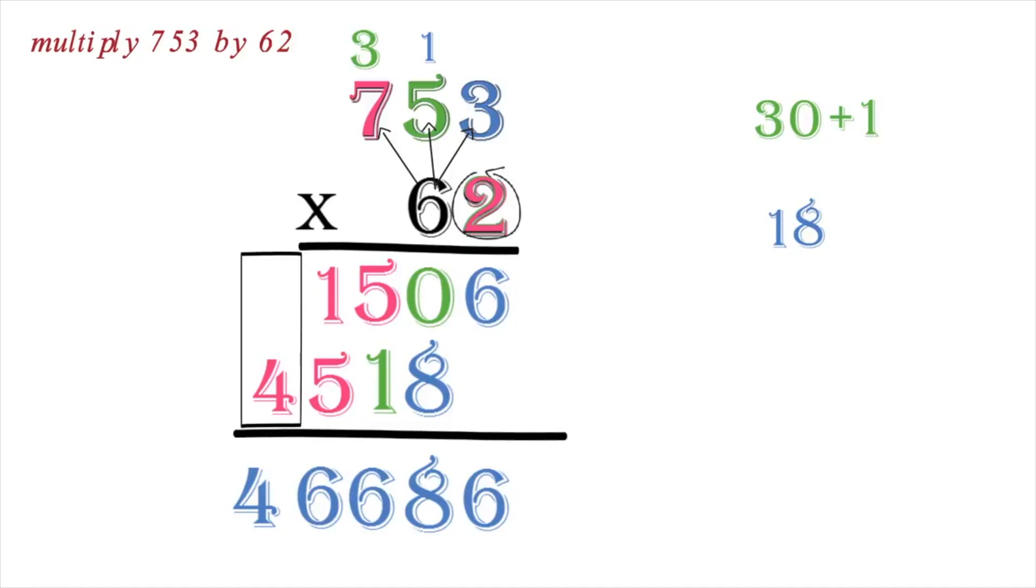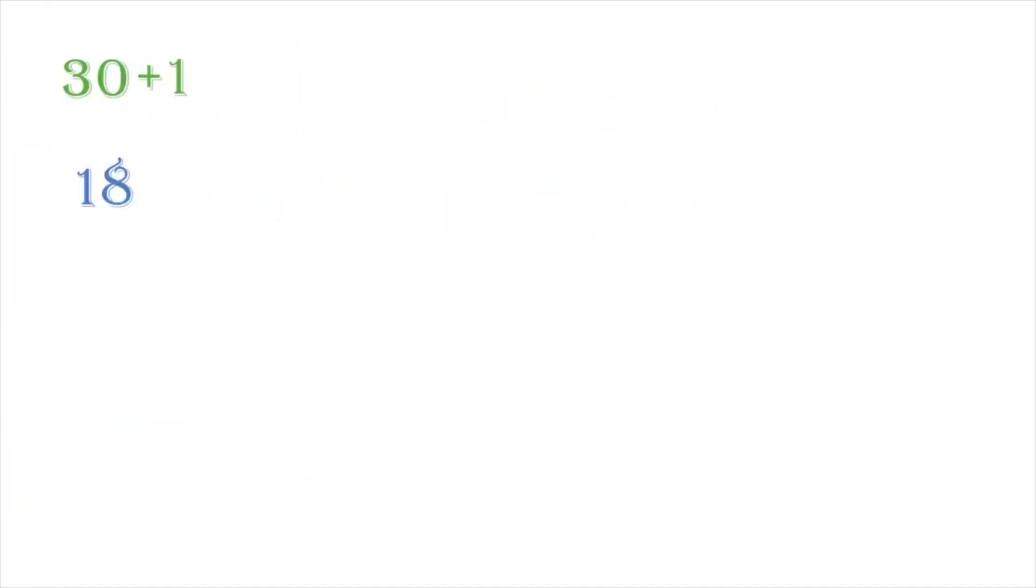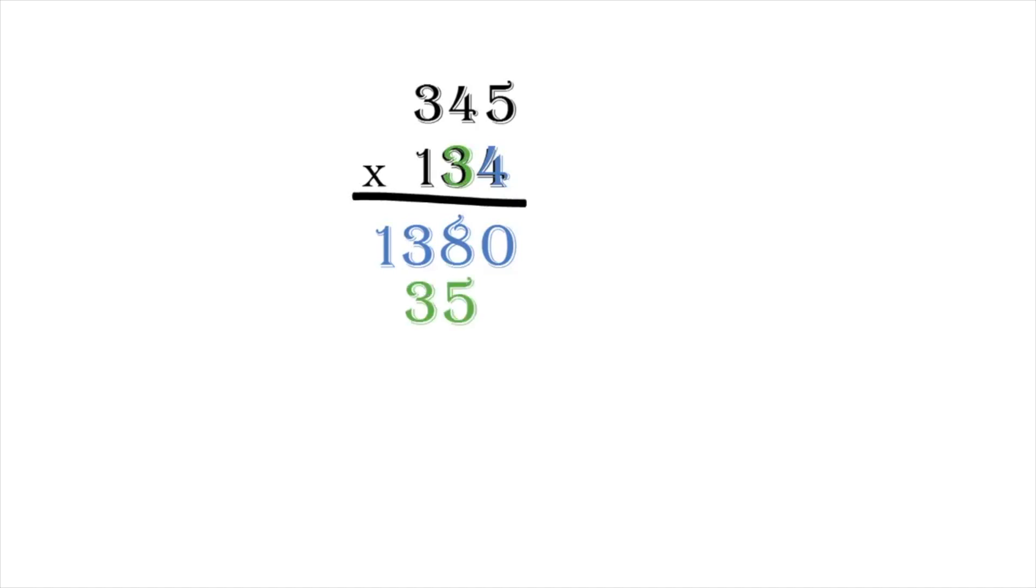Notice that if you are multiplying a 3 digit number, the idea will be the same. It will look like this. The first digit multiplies and is placed starting from the unit place. The second digit multiplies and is placed starting from the tens place. And the third digit multiplies and is placed from the hundreds place. You will then add the numbers from the unit column as usual to get this as your final answer.